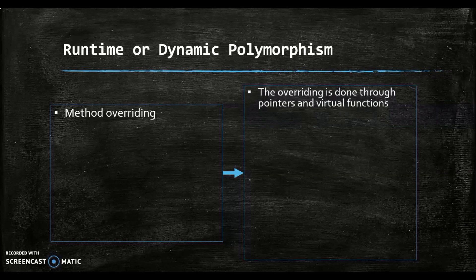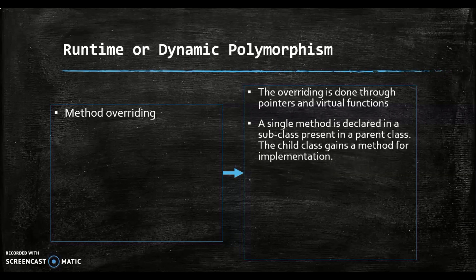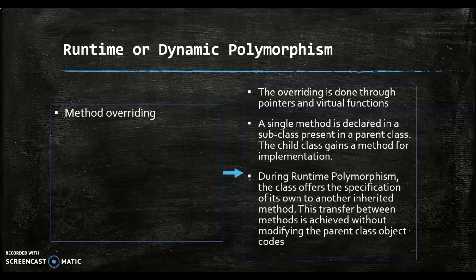In dynamic polymorphism, a call to a single overriding method is resolved during a program's runtime. Method overriding is one of the prominent examples of runtime polymorphism. In this process, the overriding is done through pointers and virtual functions. In method overriding, a single method is declared in a subclass present in a parent class. The child class gives a method for implementation. During runtime polymorphism, a class offers its own specification to another inherited method. This transfer between methods is achieved without modifying the current class object's code.